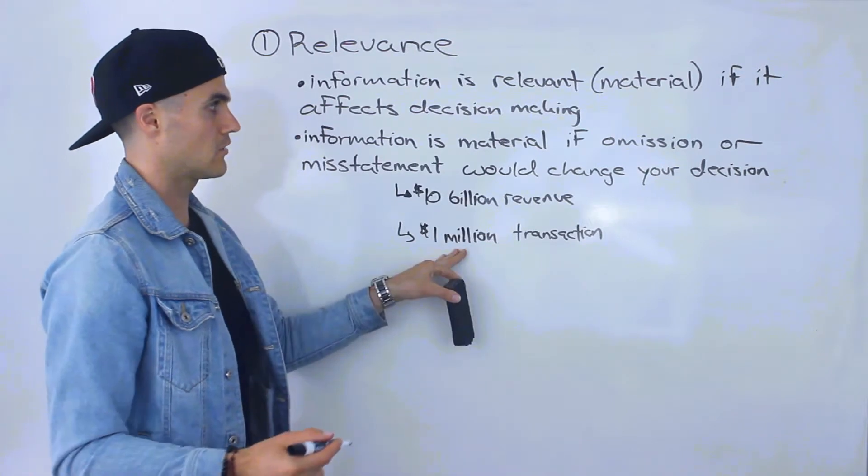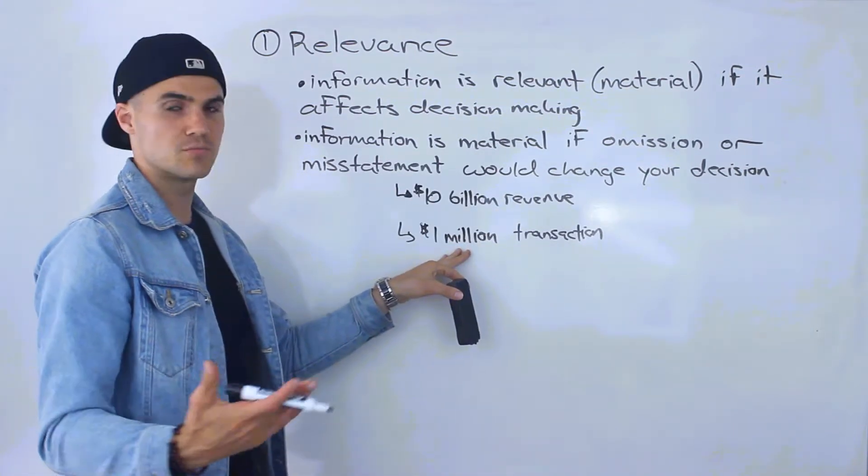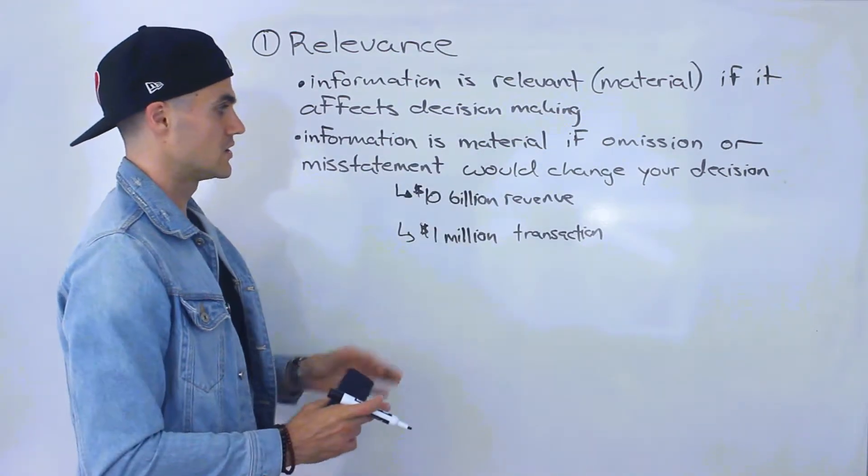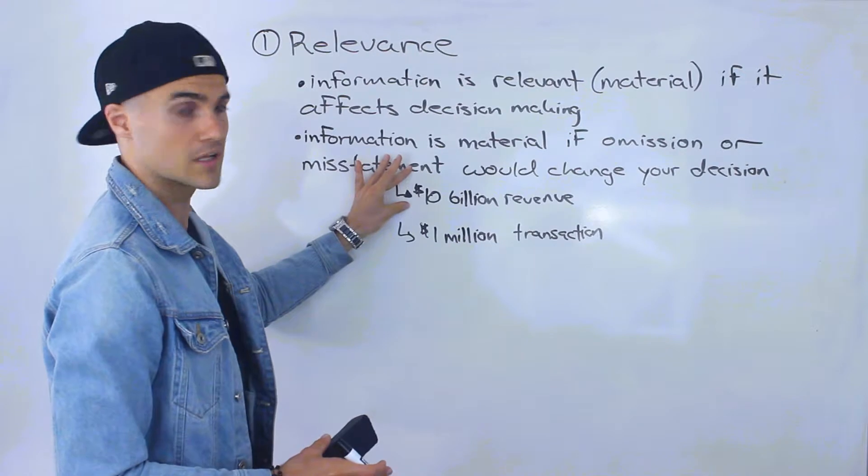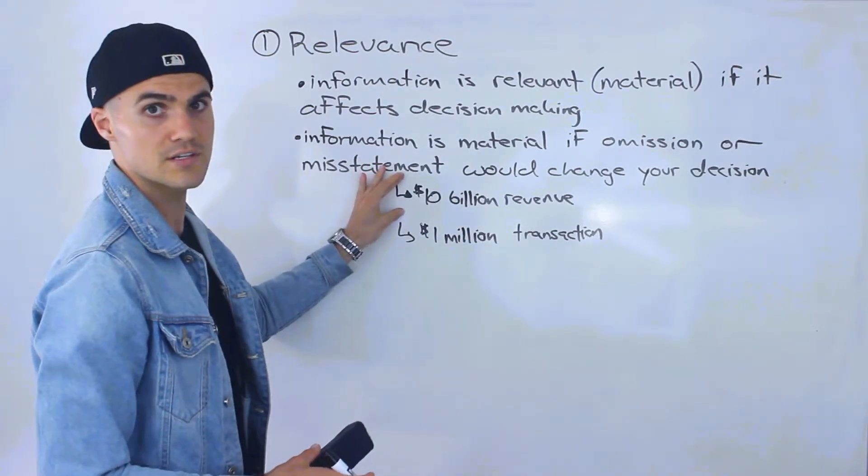So $1 million out of $10 billion is not too big of a deal. If there's a misstatement of that, or maybe even an omission of that, it's not going to be too big of a deal for you. It's not as relevant. It's not as material just because of the size of this company and how small this transaction is compared to the size of the company.